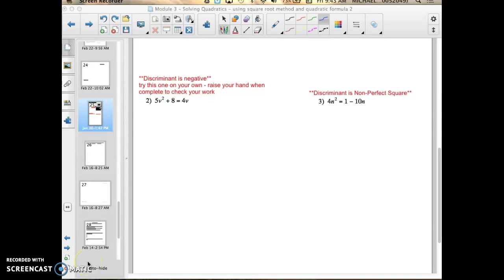Alright, in this video I want to show you one more example. I'm going to do example number three where the discriminant is a non-perfect square, and then after this example I'm going to have you try number two on your own where the discriminant is negative. Raise your hand when you've done this so I can come check your work to make sure you're ready to go on to work through the homework objective to obtain mastery in that section.